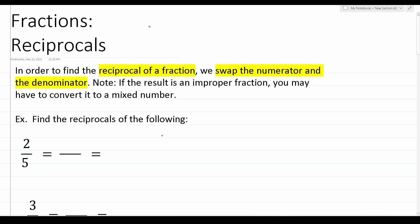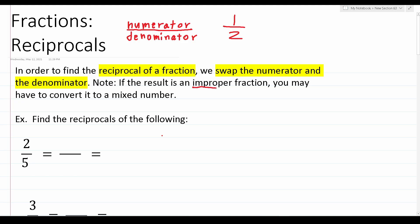A fraction has three main parts. The first part is the fraction bar. The number that sits above the fraction bar is called the numerator, and the number that sits below the fraction bar is called the denominator. So the fraction one half has a numerator of one and a denominator of two. An improper fraction is a fraction in which the numerator has a greater value than the denominator. For example, seven over two — the numerator seven is bigger than the denominator two — so we call this an improper fraction.